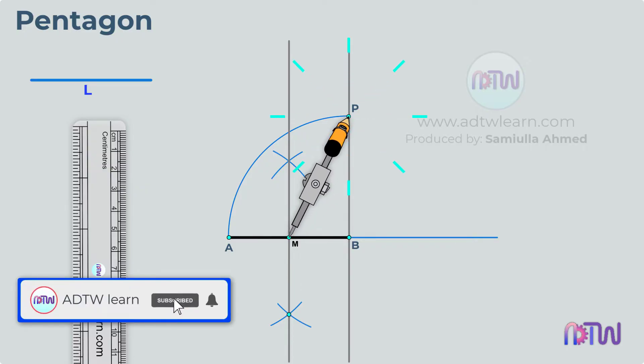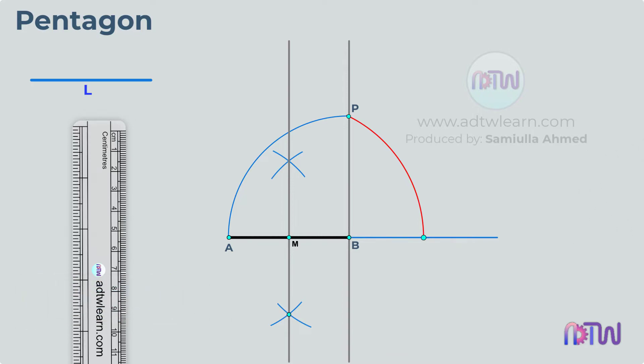Place the compass at point M, adjust its length up to point P, and draw an arc up to the horizontal line. Mark this point as Q.